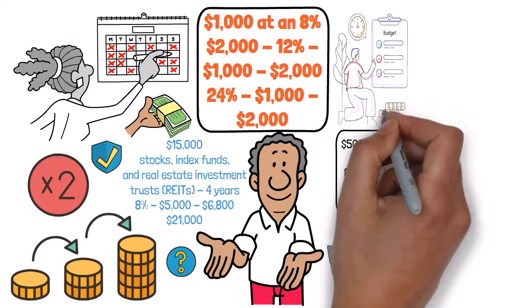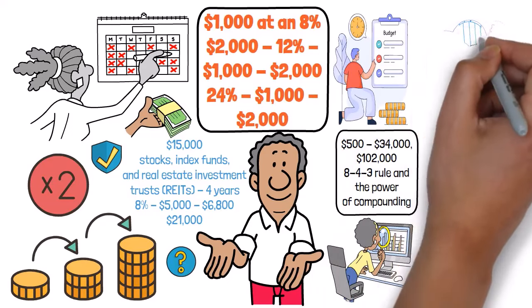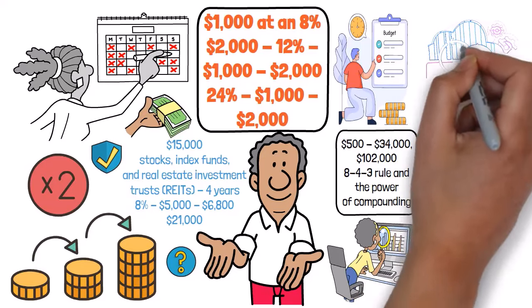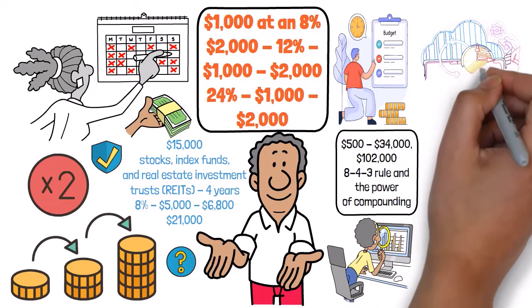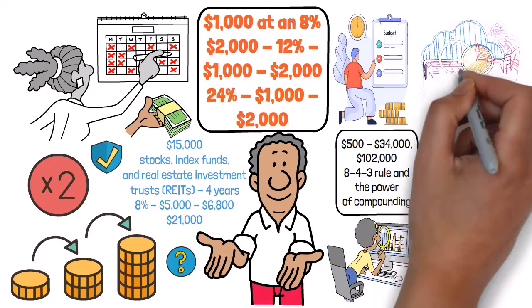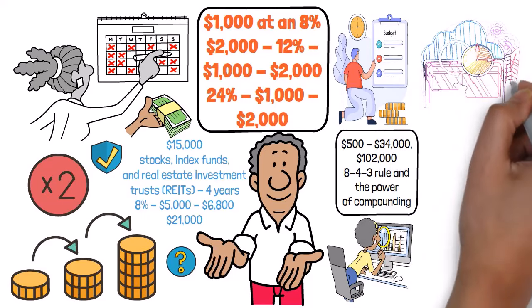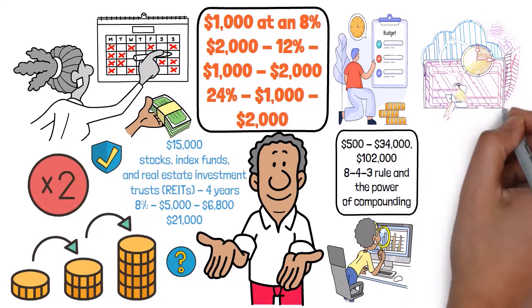But life gets busy, and it's easy to forget to make those regular contributions. That's where automation comes in handy. Set up automatic transfers from your bank account to your investment account, whether it's through your employer's retirement plan, a brokerage account, or a robo-advisor platform. This way, you take the guesswork out of investing and guarantee that you're steadily adding to your portfolio month after month.